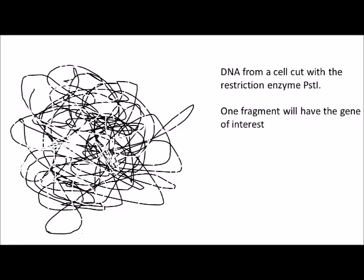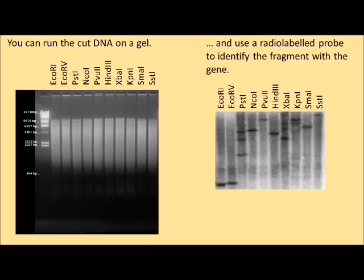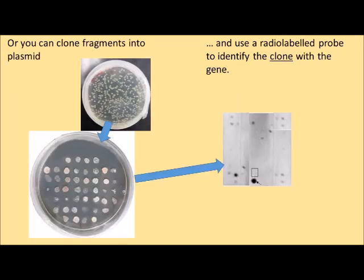Once we've cut the DNA with a restriction enzyme, for example PST1, we can then run that DNA on a gel. We do electrophoresis to separate the fragments, and we'll end up with what looks like a long smear of DNA fragments on the gel. If we use a radio-labeled probe specific to our gene of interest, we can identify the fragment that has that gene, and then we can isolate and purify it.